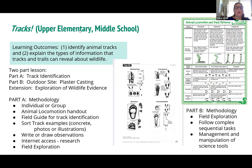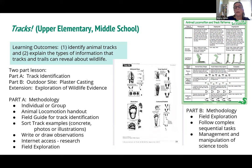Looking at methodology, universal design addresses methodology. The lesson says kids can work individually or in groups. It has a handout — a green handout on animal locomotion and track patterns. It talks about sorting examples, providing a handout with four different animals and their tracks, and how you can supplement with pictures, photos, illustrations, or actual molds of different kinds of tracks. Students write or draw their observations in a science journal, they do internet access, and they go out on field exploration.